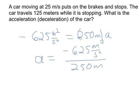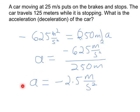Working through the units: meters squared divided by seconds squared, divided by meters — one meter cancels, leaving meters per second squared. So A = −2.5 meters per second squared. The negative sign confirms this is a deceleration, which we get automatically from the math.